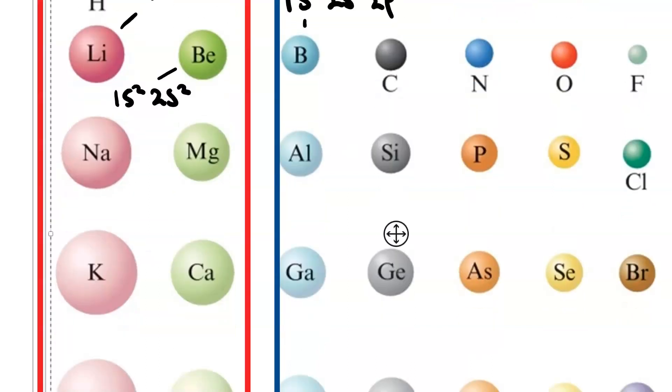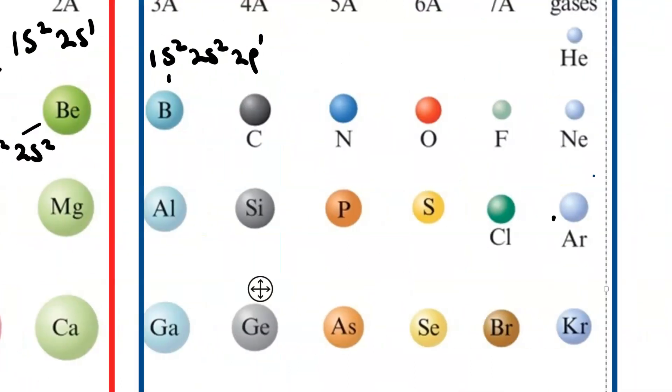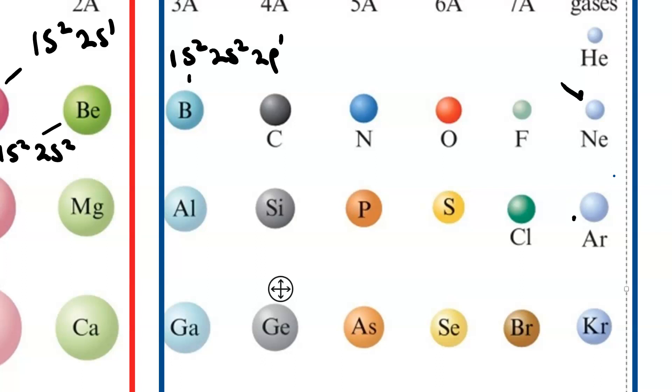By the time you've gotten over to neon, that's the smallest in the second row. And yet, the electron configuration is 1s2, 2s2, 2p6, 8 electrons. How is it that as the number of electrons goes up, the size of the atom can decrease?